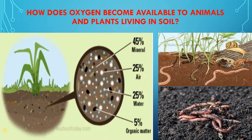The animals which live in soil and the plant roots which grow in the soil, they need oxygen to breathe. Oxygen is present at 21% in our atmosphere and it is very indispensable for life on earth. So all the animals that live in soil and the plant roots which grow in soil need oxygen to breathe. They get this oxygen from the air present in the spaces between the soil particles.